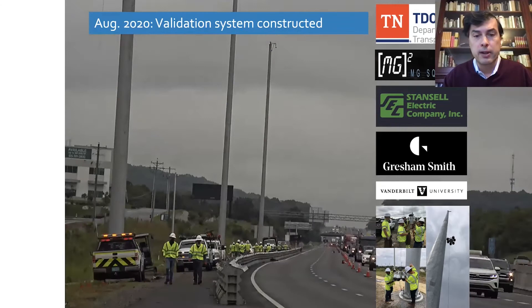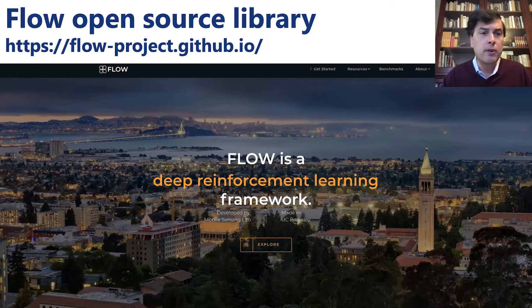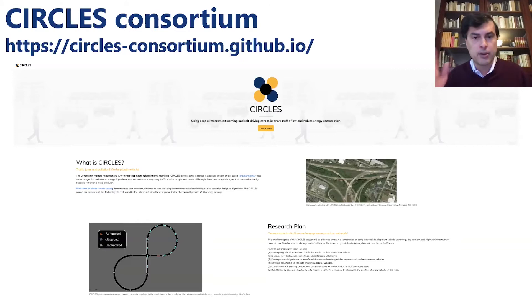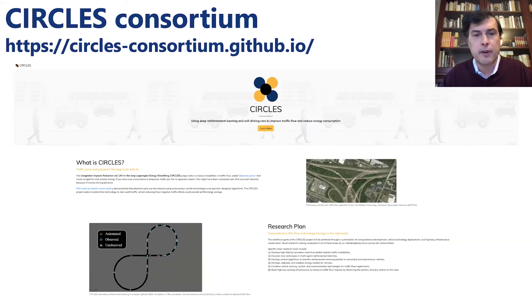If you're interested in downloading the software, go to flow-project.github.io — it's all open source. If you're interested in the Circles project as a consortium, whether you're an automaker, an industry startup, or an academic, contact us. We are on five campuses already and plan to grow the community further. I've reached the end of my presentation and will be happy to answer questions.